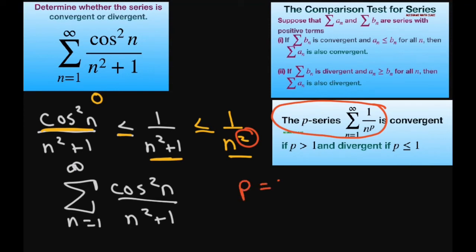So our p equals 2 which is greater than 1. Therefore we have a convergent series.